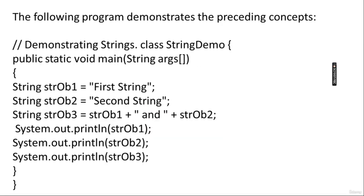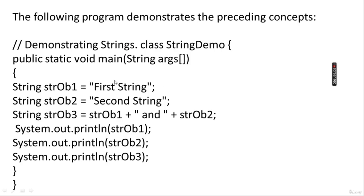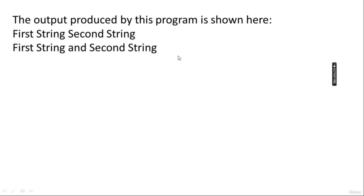The following program demonstrates concepts related to string handling. In class StringTable, four String objects are created: stringObject1, stringObject2, stringObject3, and a concatenation of stringObject1 and stringObject2. There are three println statements. The output shows: first string, second string separately, and then first string concatenated with second string.